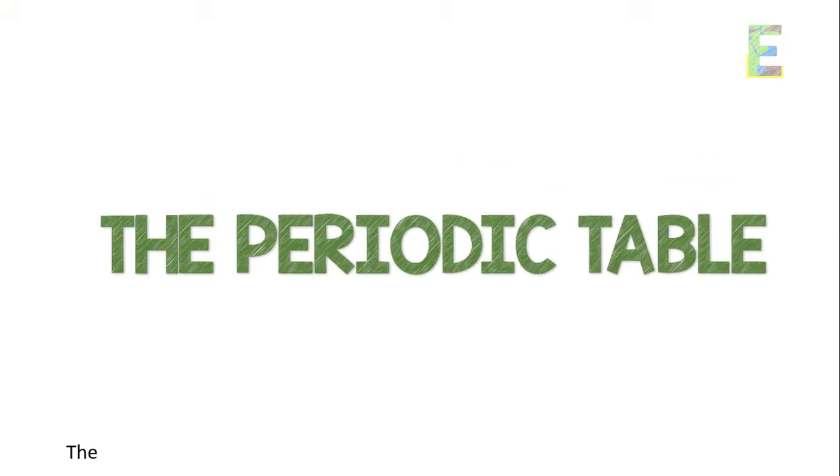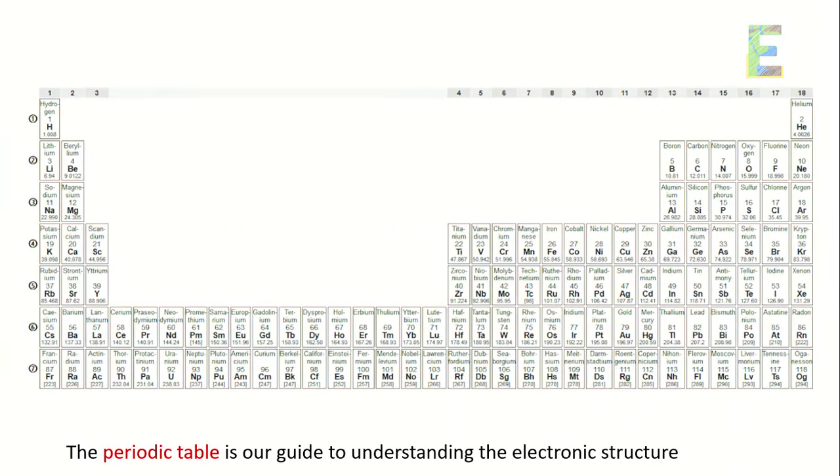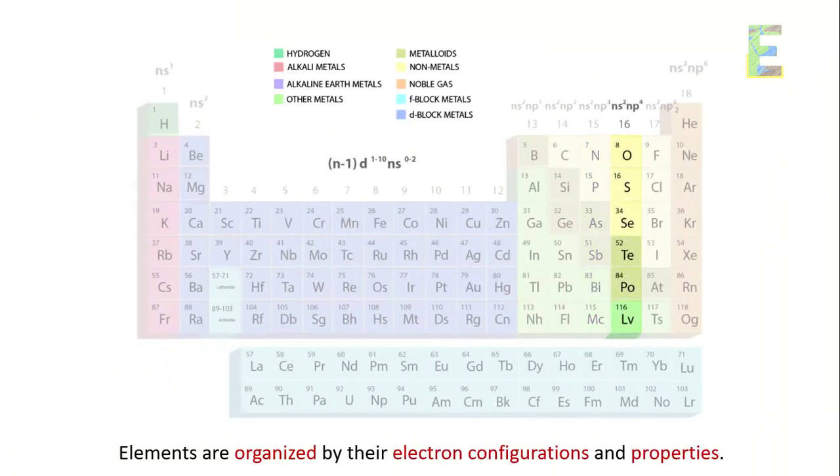The periodic table is our guide to understanding the electronic structure of matter. Elements are organized by their electron configurations and properties.